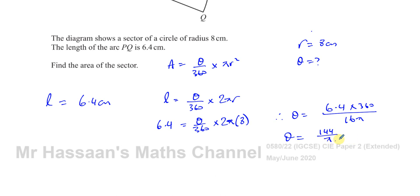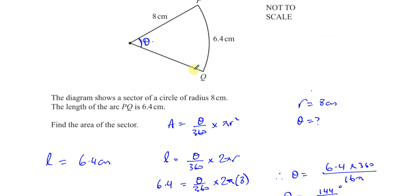That's going to be 144 divided by pi. Okay, so that's what theta is. So I'm going to leave it in this exact form. Okay, that's the angle of theta in degrees. 144 over pi degrees.